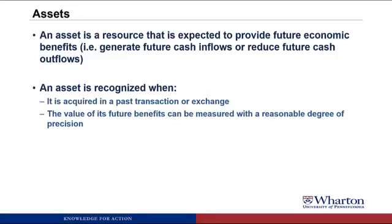For example, if we buy a truck, the truck would be considered an asset. We acquired ownership of the truck in an exchange, and the value of the benefits of the truck are equal to the price that we paid to buy the truck, so both criteria are satisfied and it would be an asset.